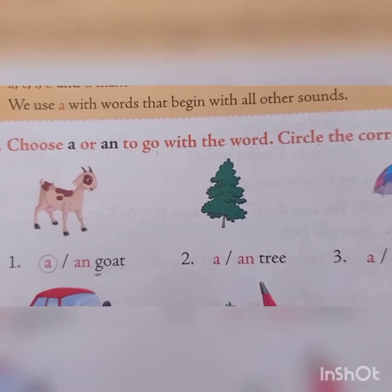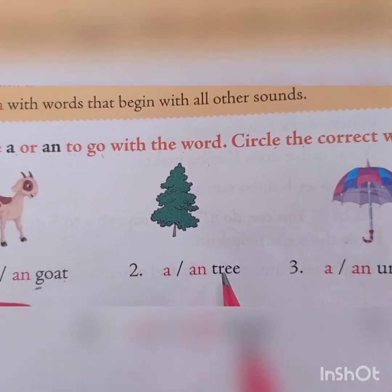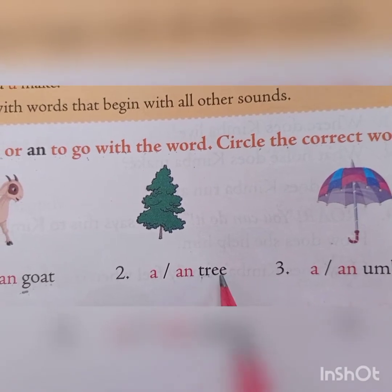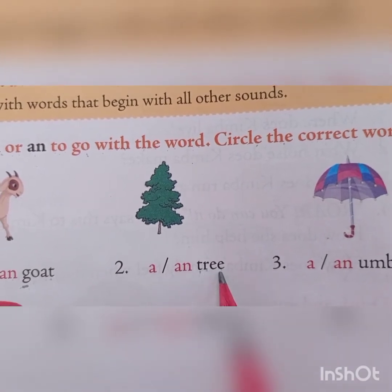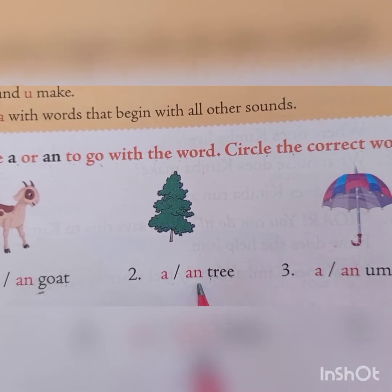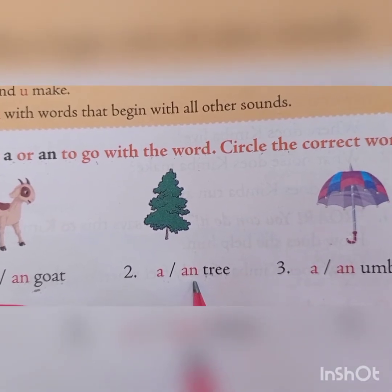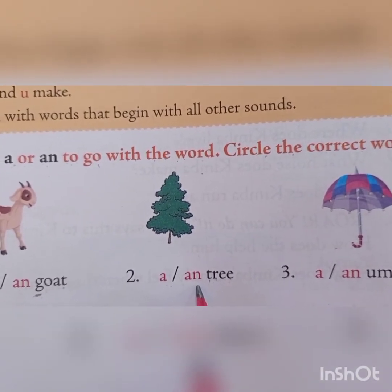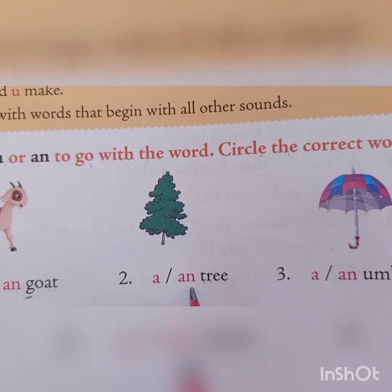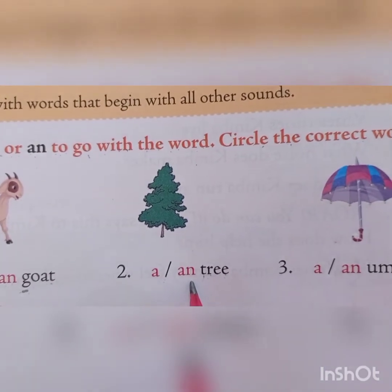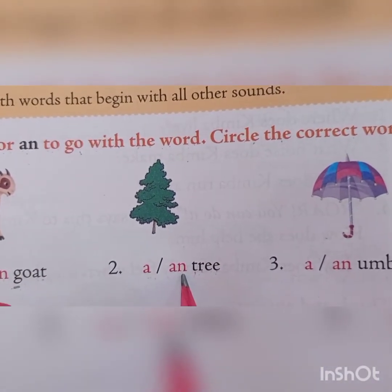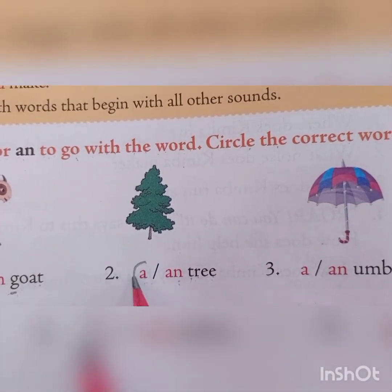Very good. Now the second picture is 'tree.' Before tree, what do we use — A or AN? A tree. T is a consonant, so we use 'a.' Very good. A.